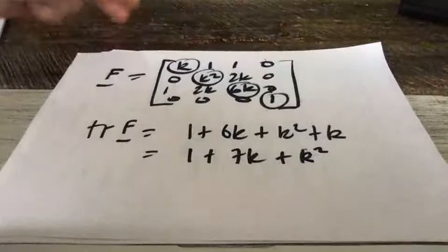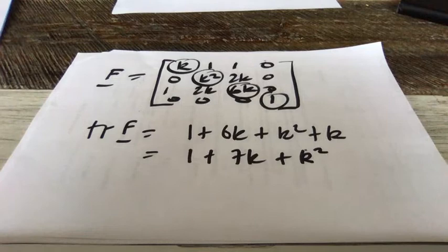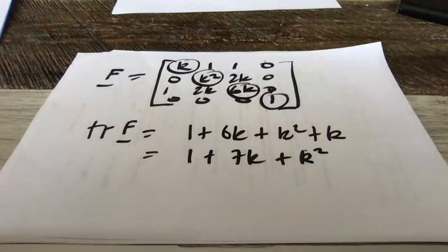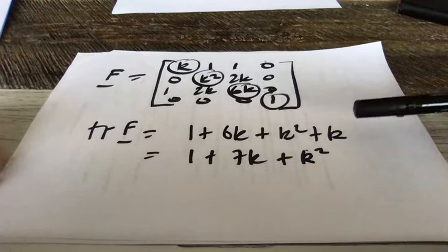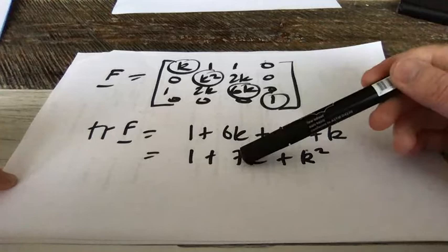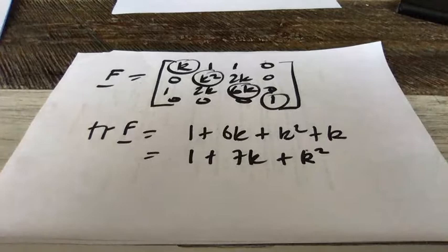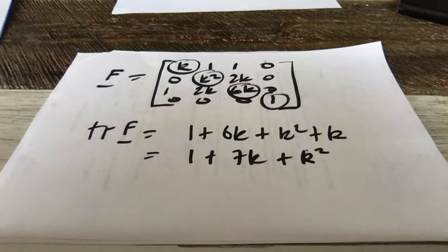Here's an example I prepared earlier. If you look at matrix F, this is a 4 by 4 matrix, and in addition to the numbers one and zero, you've got the symbol K — K could be either a constant or a variable, it doesn't really matter. If you want to get the trace of matrix F, all you do is look at the four elements along the main diagonal and add them up. So you get 1 plus 6K plus K squared plus K. If you're good with algebra, you can add the 6K to the 1K to get 7K, and represent it as 1 + 7K + K squared. So depending on what K is, the trace of F will change. You're taking a complicated 4 by 4 matrix and reducing it to a single scalar expression.